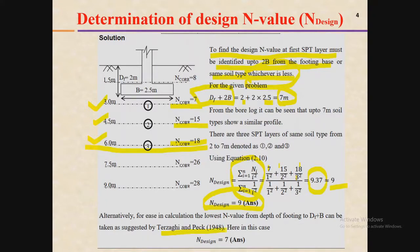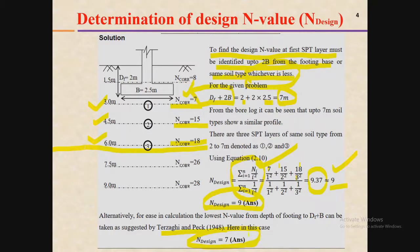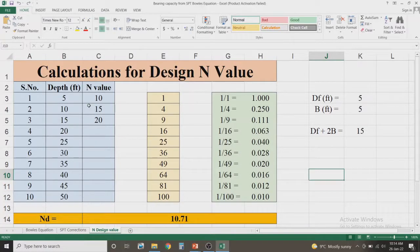But there is another criteria fixed by Terzaghi and Peck in 1948. They stated that if the calculated design N value from this correlation is more than any of the SPT N values in the depth under consideration, then the lowest value will be used. In the depth under consideration, the lowest N value is 7, but the design N value from the formula is 9. So per the Terzaghi and Peck criteria, the design N value for safety and conservation is 7, which will be used in the determination of the allowable bearing capacity.